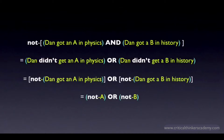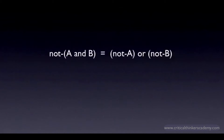When you have a not sign in front of a conjunction, you push the not inside the brackets, distribute the not across both of the conjuncts, and then switch the and to an or. The basic rule looks like this. If this formula looks algebraic to you, that's because it is — this is a formal equivalence in propositional logic.